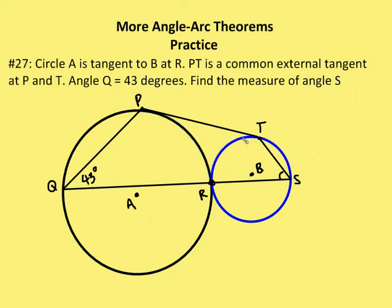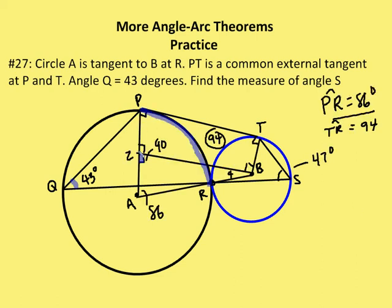To recap: we had a common external tangent, a known inscribed angle, and two circles tangent at point R. We drew radii AP and BT, created rectangle PZBT, determined arc PR = 86 degrees (twice inscribed angle Q), found central angle A = 86 degrees, leaving 4 degrees for angle ZBA. Adding that to TBZ gave central angle TBA = 94 degrees, so arc TR = 94 degrees, and inscribed angle TSR = 47 degrees. That's it for OttenMath and more angle-arc theorems — please join us for the next edition.